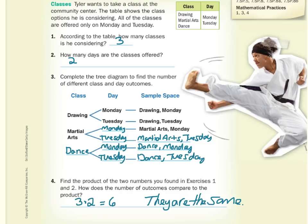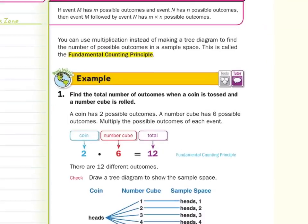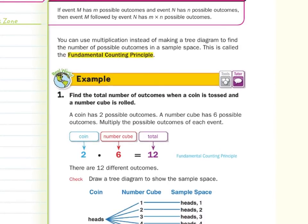Today's lesson is on using multiplication to count outcomes and find probability — the fundamental counting principle. If event M has M possible outcomes and event N has N possible outcomes, then event M followed by event N has M times N possible outcomes. You can use multiplication instead of making a tree diagram to find the number of possible outcomes in a sample space. This is called the fundamental counting principle — it means instead of making tree diagrams or tables, we can now use multiplication instead.